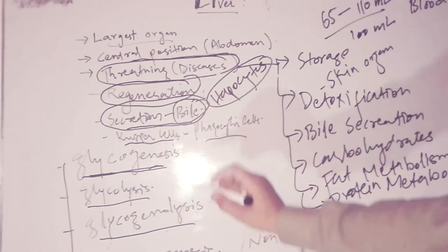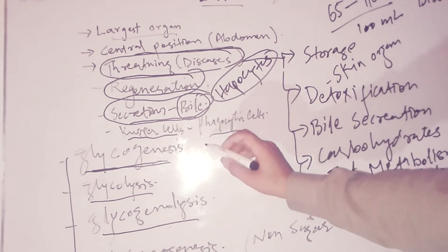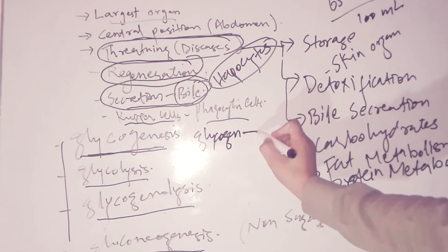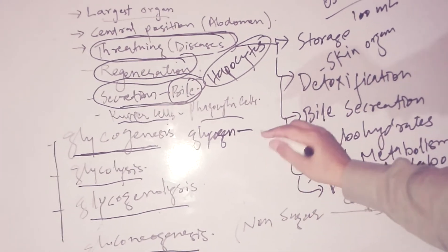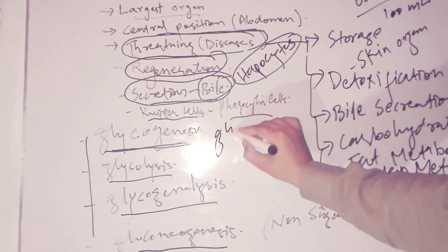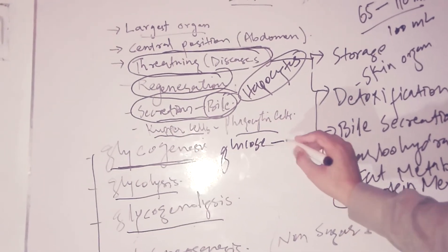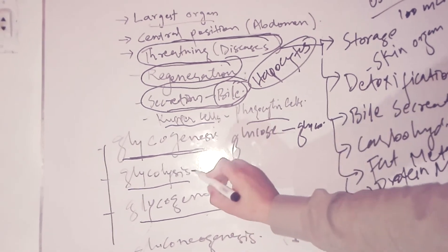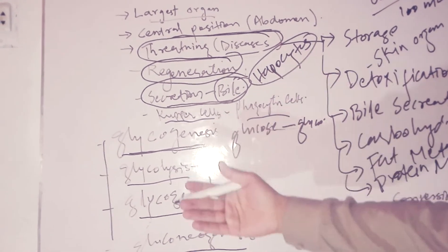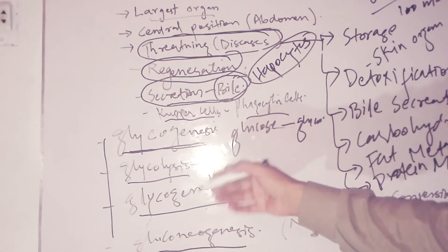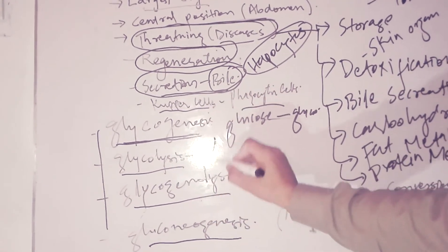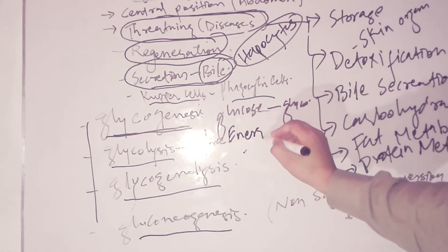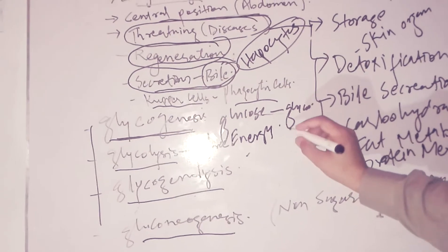Glycogenesis is the conversion of glucose to glycogen. Glycolysis is the production of free energy by breakdown of glucose, so free energy is produced in the body by the breakdown of glucose.